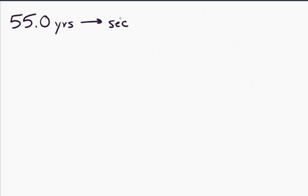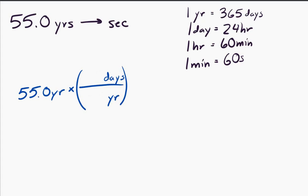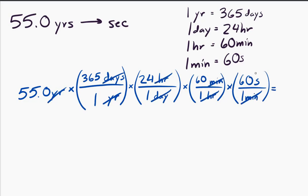Let's try converting 55 years to seconds. This is trickier because we don't know directly how many seconds are in a year. We use readily available information: one year is 365 days, one day is 24 hours, one hour is 60 minutes, and one minute is 60 seconds. We set up multiple conversion factors in sequence — the first takes us from years to days, the second from days to hours, the third from hours to minutes, and the last from minutes to seconds. We end up with 1.73 times 10 to the 9 seconds.